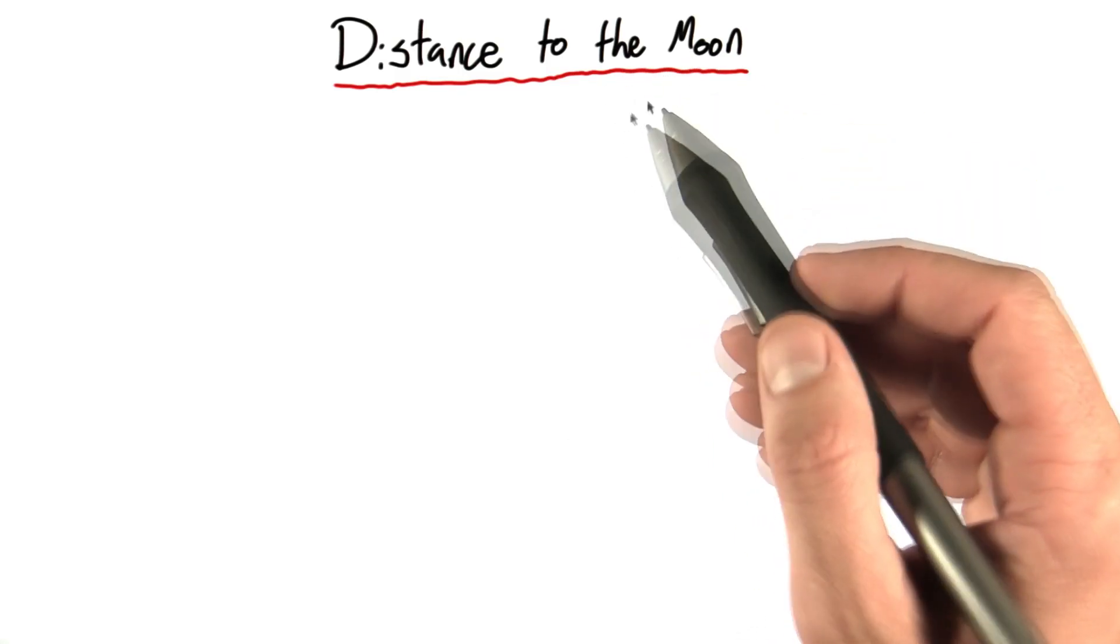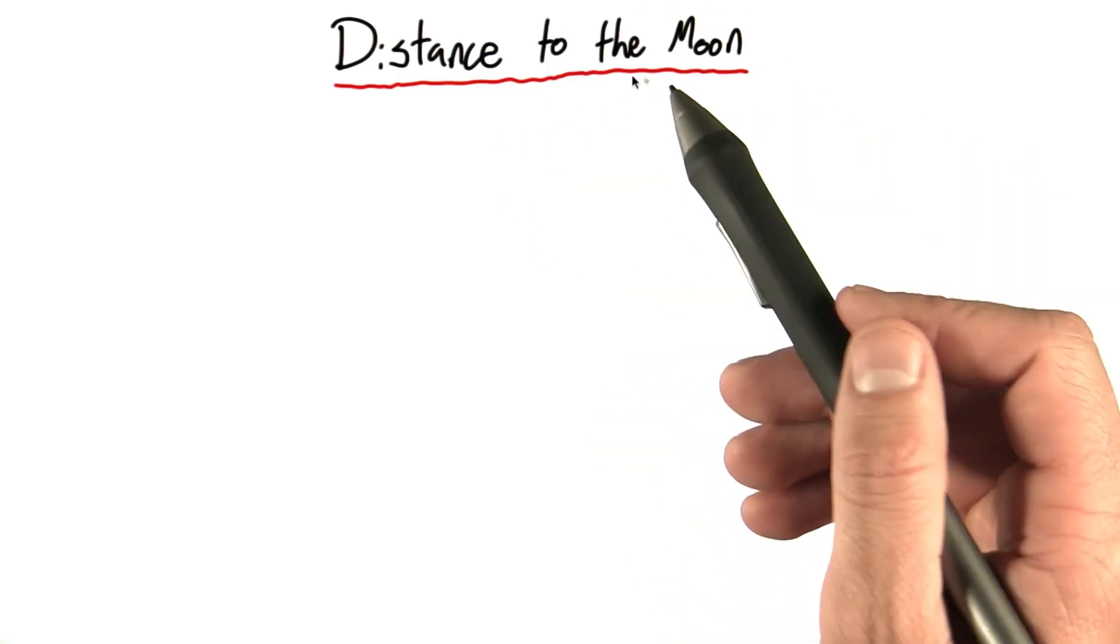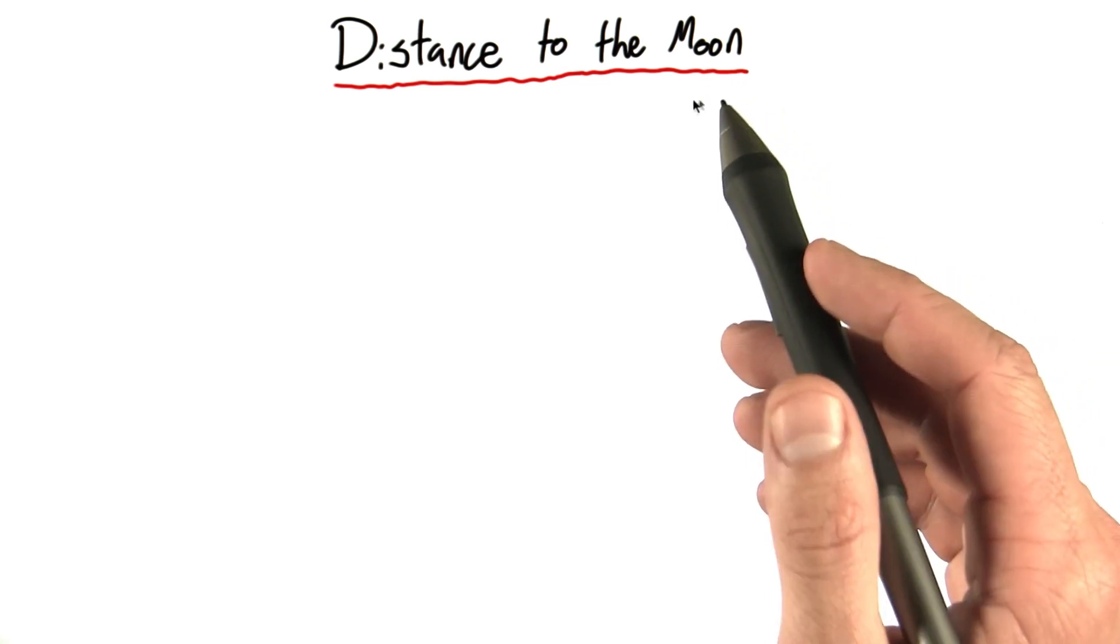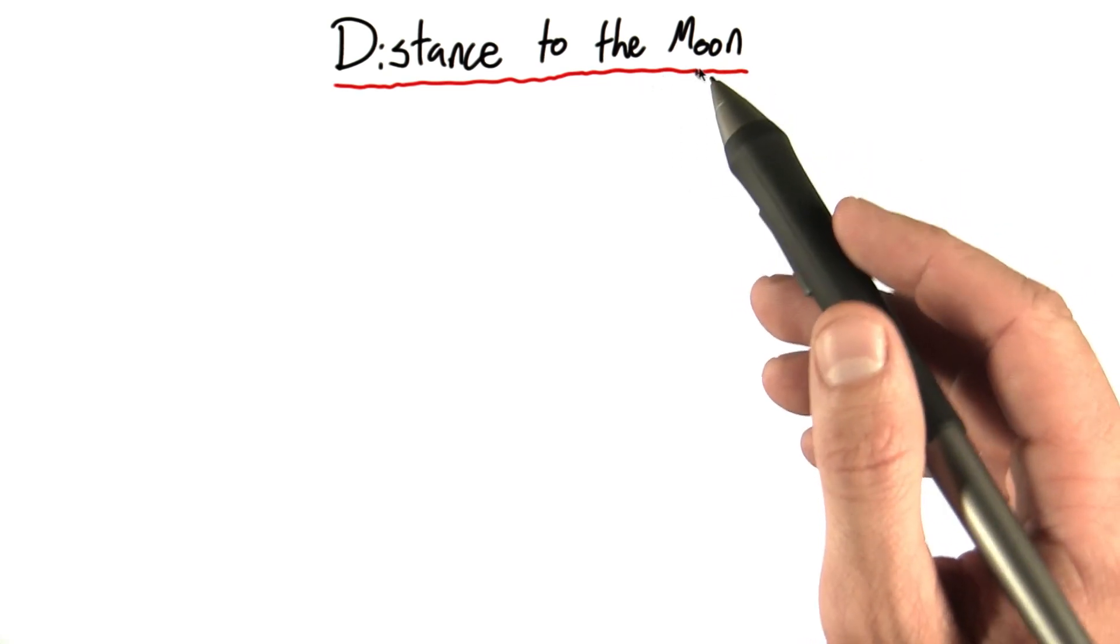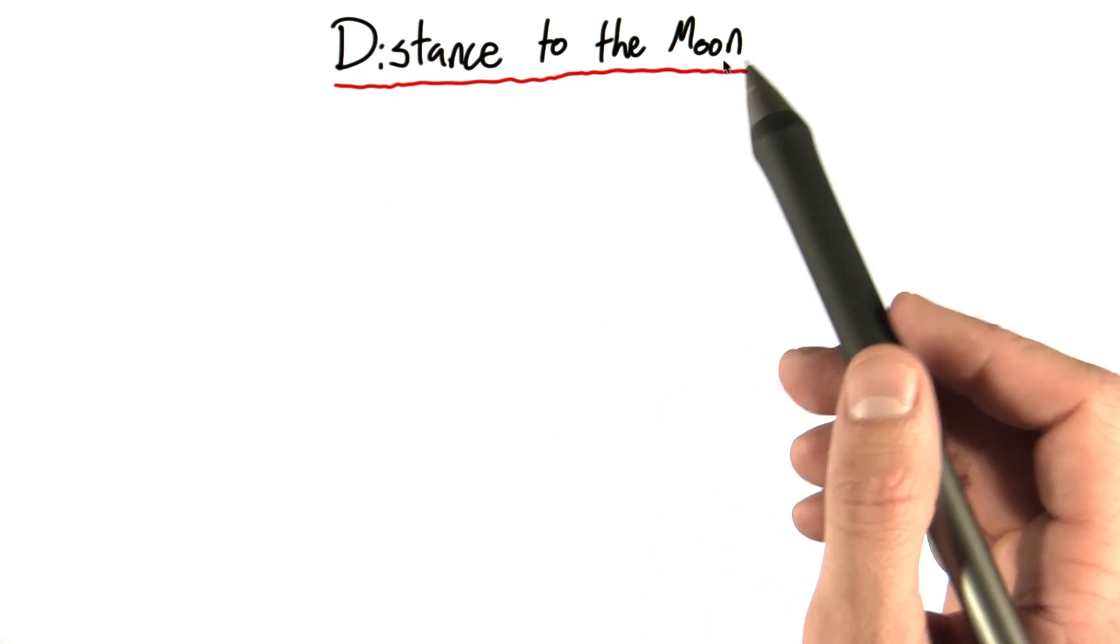So you've already calculated the circumference of the Earth. You've hopefully calculated the circumference of the moon in the previous question. And I really mean hopefully because now I'm going to tell you what it is because we need that number to calculate the distance to the moon.